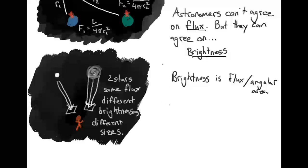Let's go back to our example above with our two astronomers, each two different distances away from the same star, R1 and R2. Astronomer 1 measured the flux equal to the luminosity of that star divided by 4 pi times R1 squared.